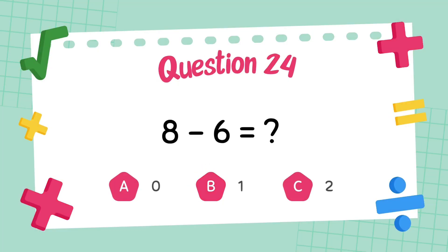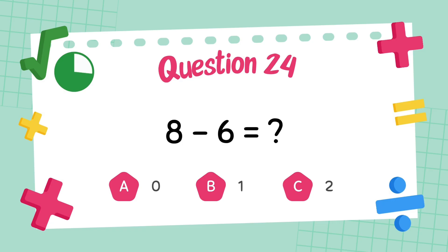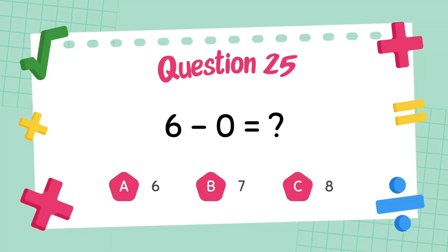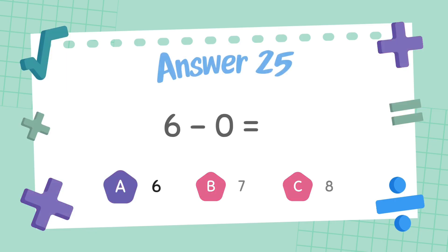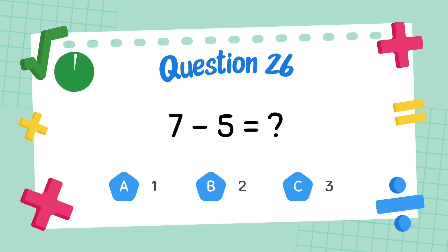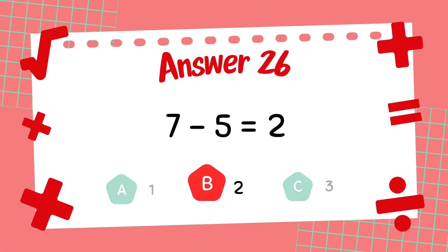What is six minus six? The answer is zero. What is six minus zero? The answer is six. What is seven minus five? The answer is two.